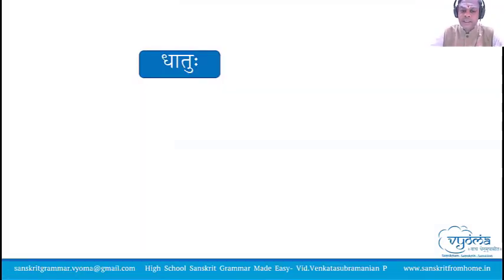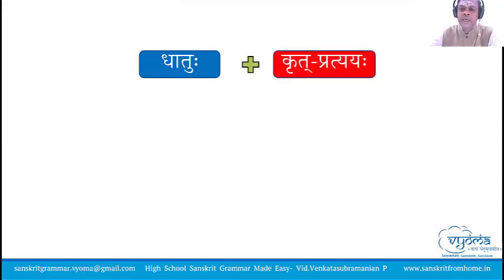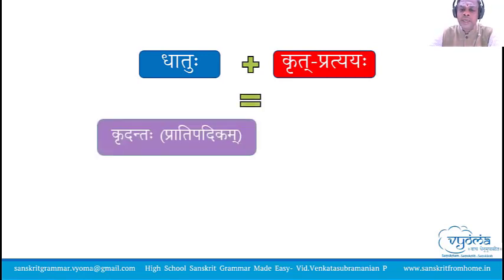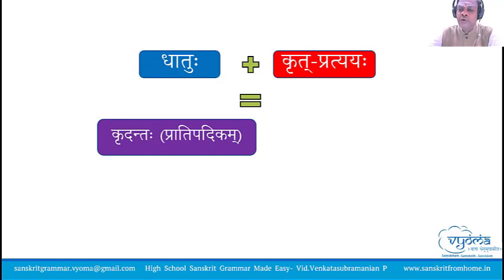All of us know that the root form of a verb is called a dhatu. When krita pratyaya is added to dhatu, a kridanta is formed. When a set of pratyayas called krita pratyayas are added to the dhatu, a new type of word is formed which is called kridanta.